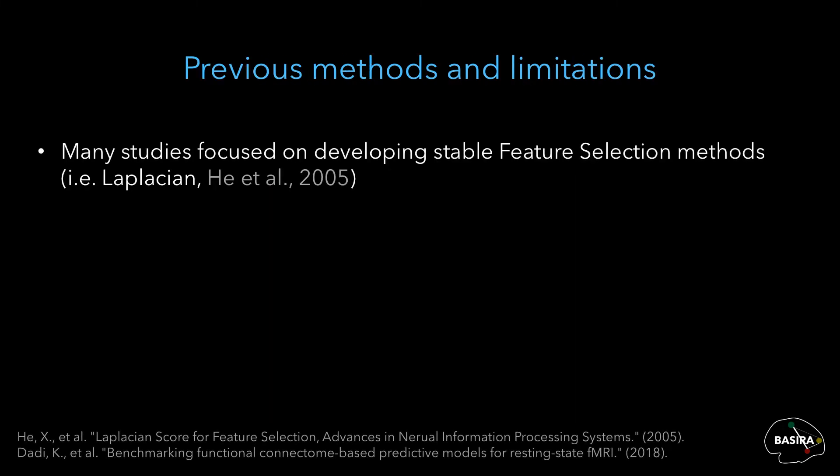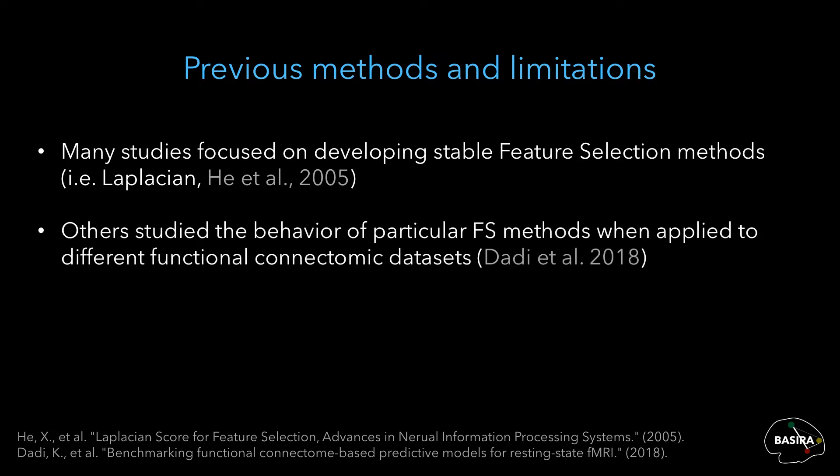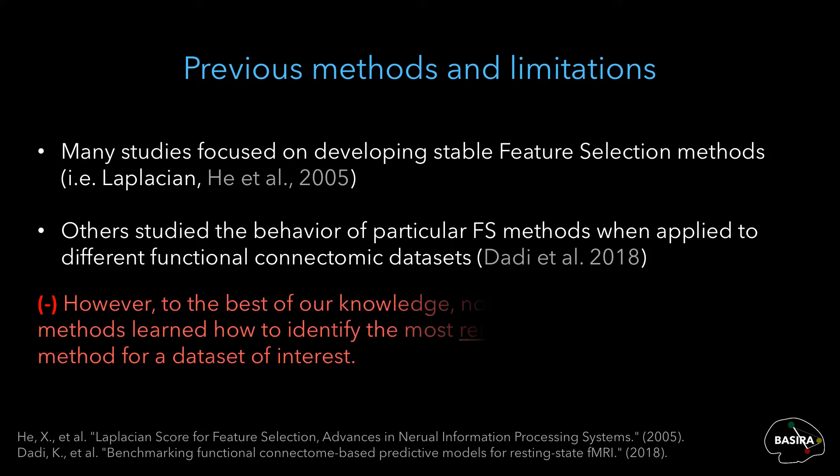Many studies focused on developing feature selection methods to operate only on a subset of the most relevant data. Others studied the influence of FS methods on different functional connectomic datasets. However, to the best of our knowledge, none of the existing works on FS methods aim to answer the raised question - learning how to identify the most reproducible and trustworthy FS methods for a dataset of interest.